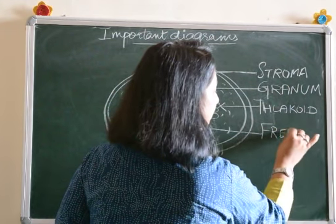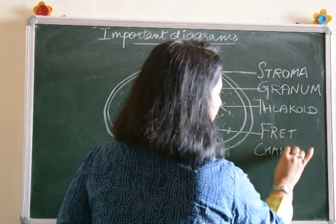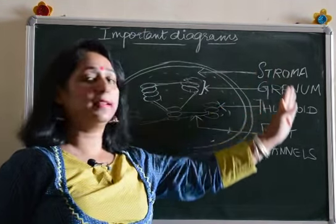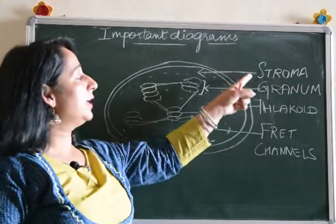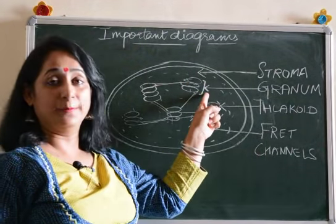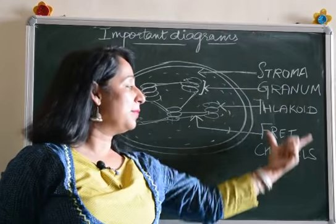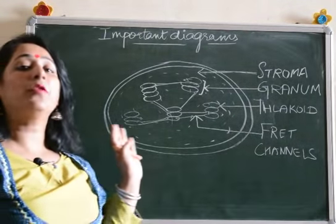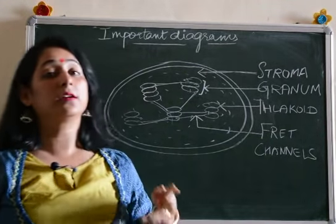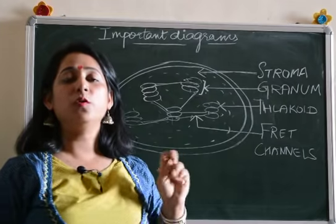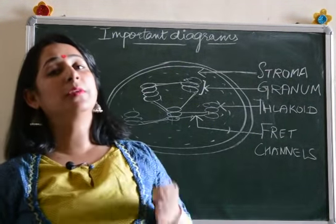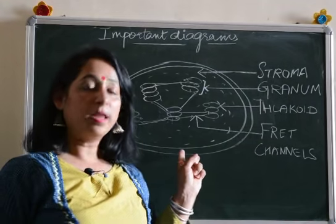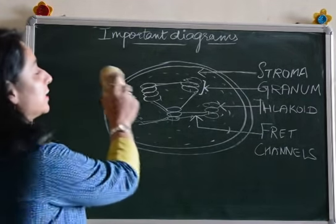The channels or lines we made to join the grana are known as fret channels. Now you can see this is the completed diagram labeled on one side with arrows — the arrows should always point to the part you have labeled. The labeling is in a proper line and written in caps. This is a complete diagram of a chloroplast. It is a two or three marker diagram which comes in a five marker question about the structure responsible for photosynthesis.